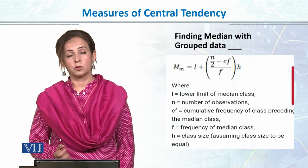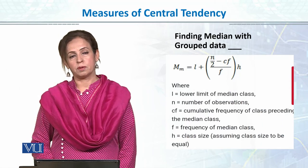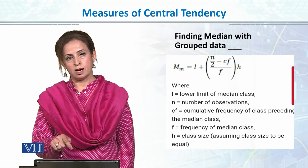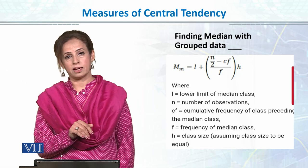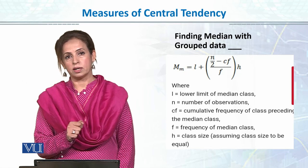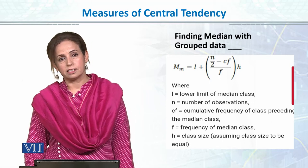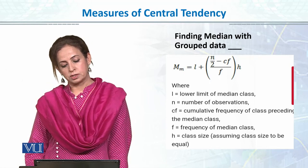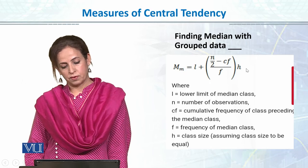How we find the median in grouped data — uske liye wohi formula hai jo hamne percentiles mein kiya hua hai. Hum us mein groups banayenge, class limits banayenge, uske baad uski frequency hogi, hum modal class identify karenge — yani the class that contains the fiftieth percentile score — aur phir uske baad hum plug in values karke median find out karenge.